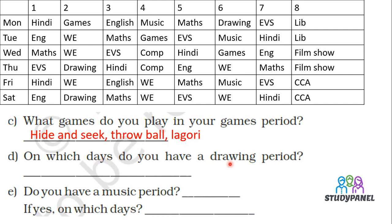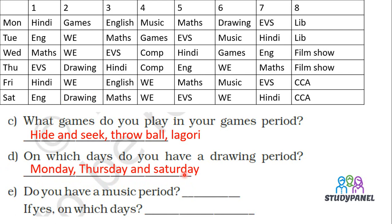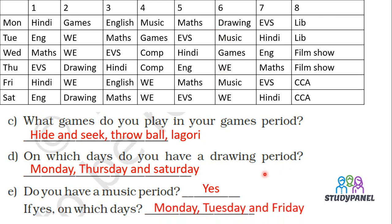On which days do you have a drawing period? Let us find out — drawing is on Thursday, Monday, and Saturday. So we have drawing on Monday, Thursday, and Saturday. Do you have a music period? Yes, of course we do. On which days? Let us find out — this is the first music period, second, and third. Music is on Monday, Tuesday, and Friday — on three days we have a music period.